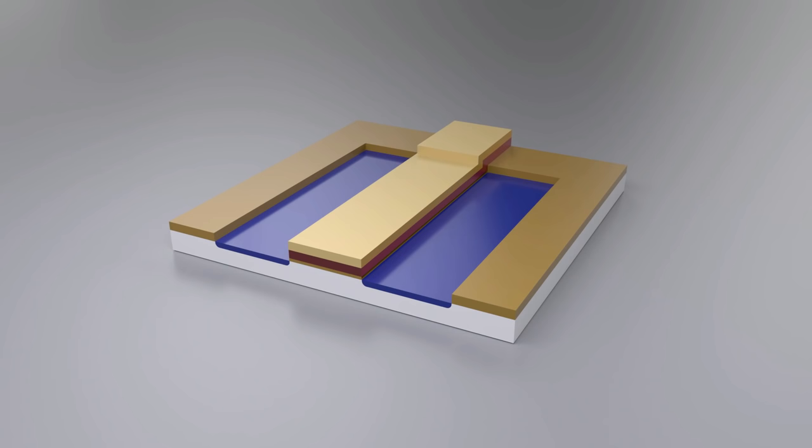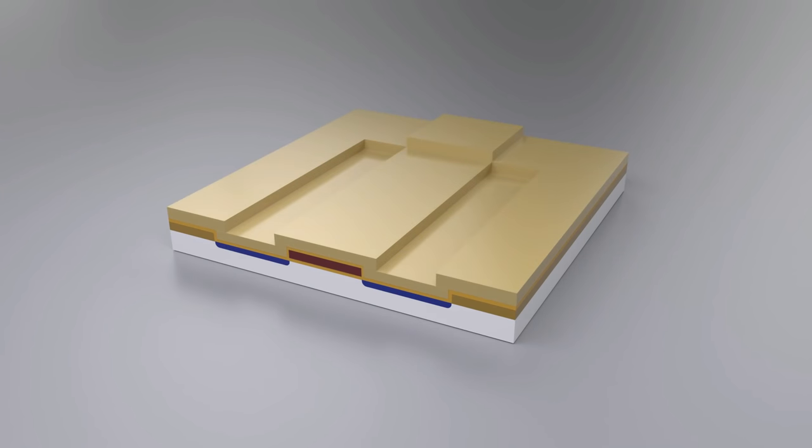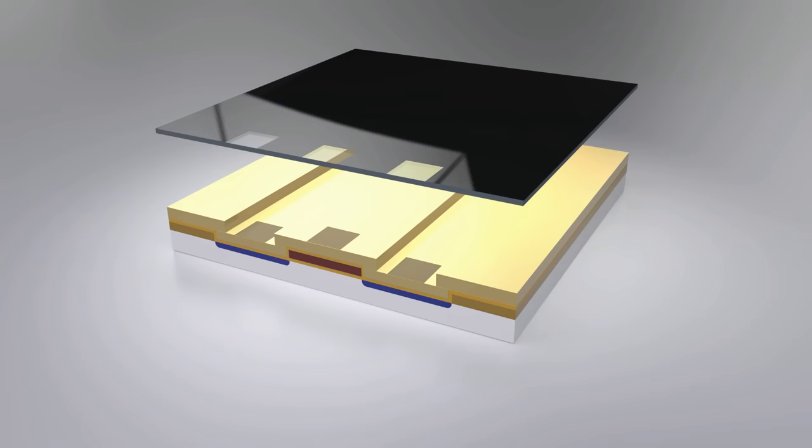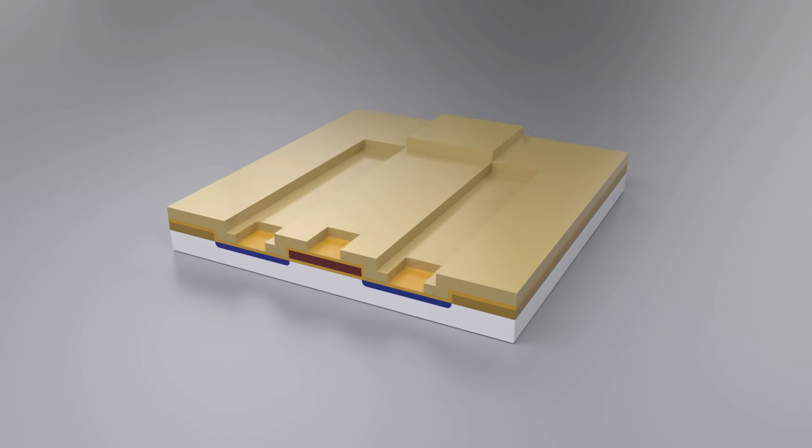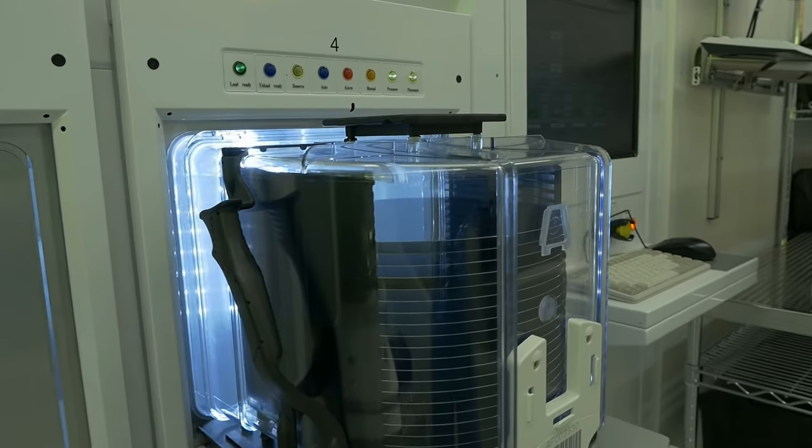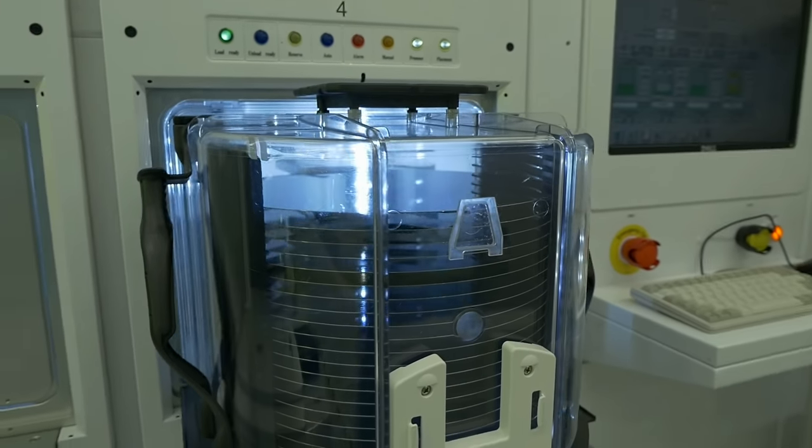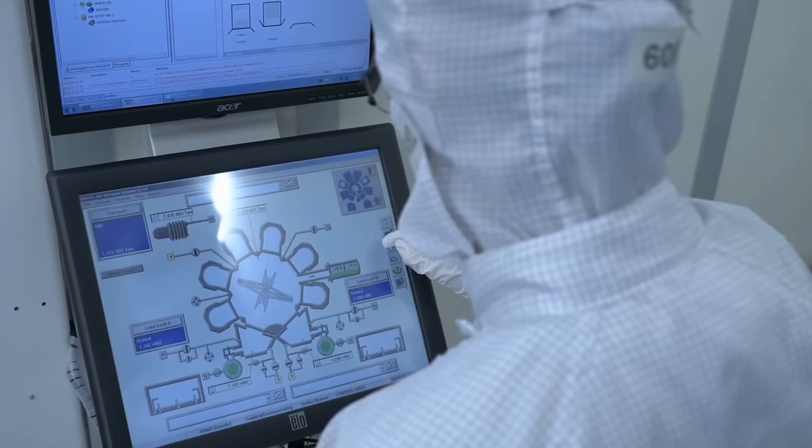After the photoresist residue has been stripped, another oxide layer is applied. The wafer undergoes another cycle of applying photoresist, exposure through the mask and stripping. Contact holes are etched to provide access to the conductive layers, enabling the contacts and interconnections to be integrated in the wafer. This is done by depositing metal alloys onto the wafer in sputtering machines.